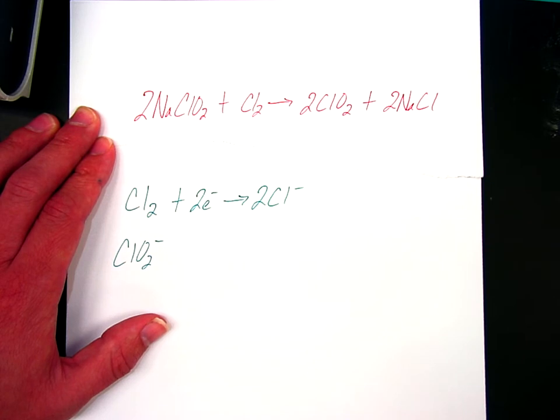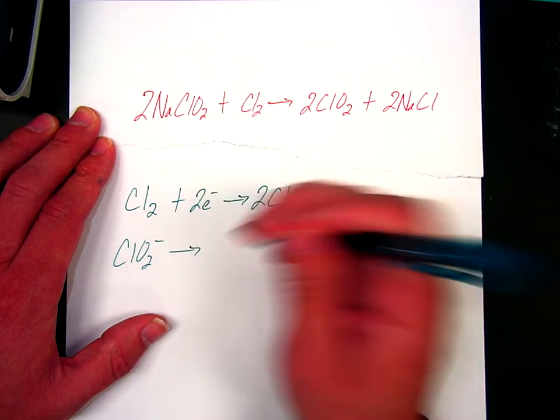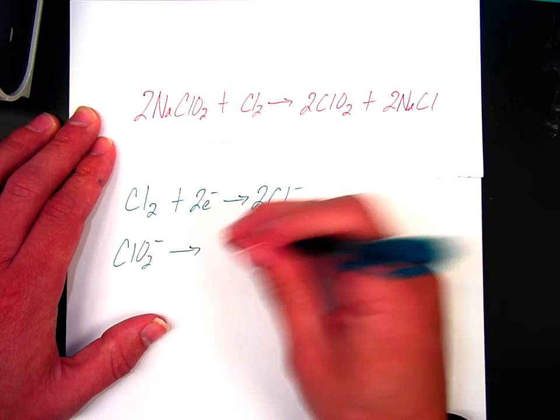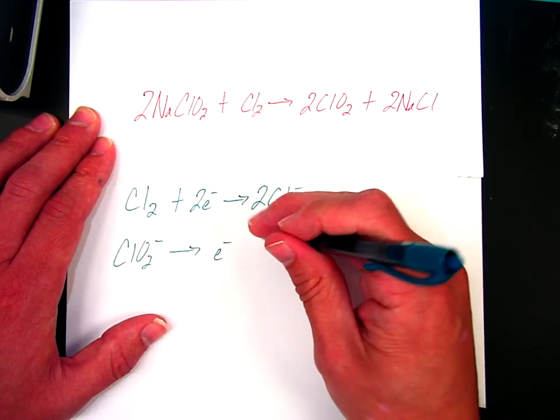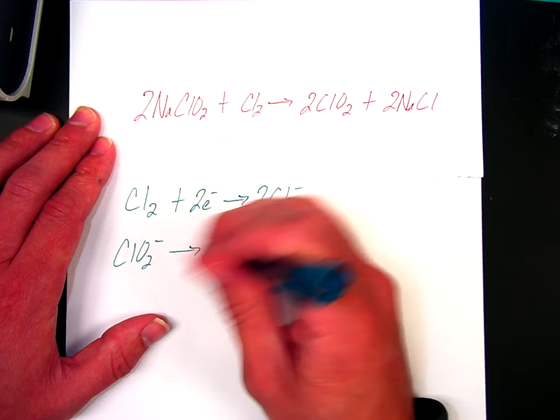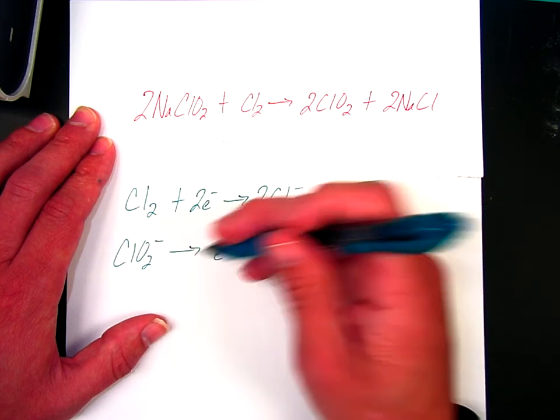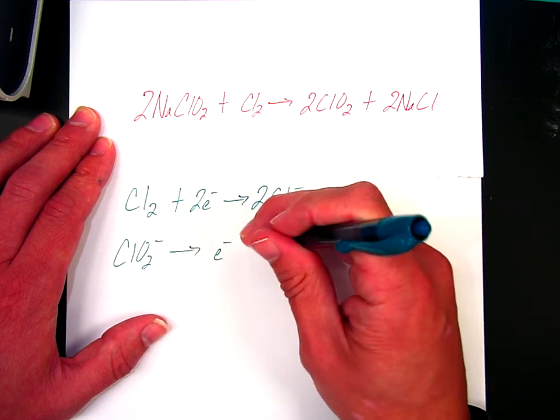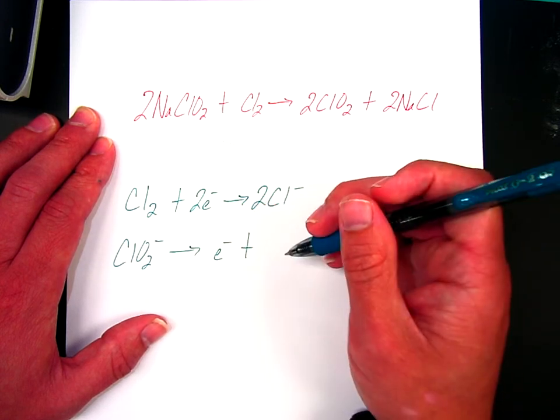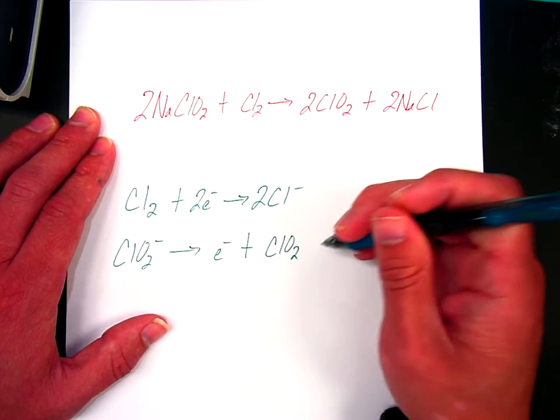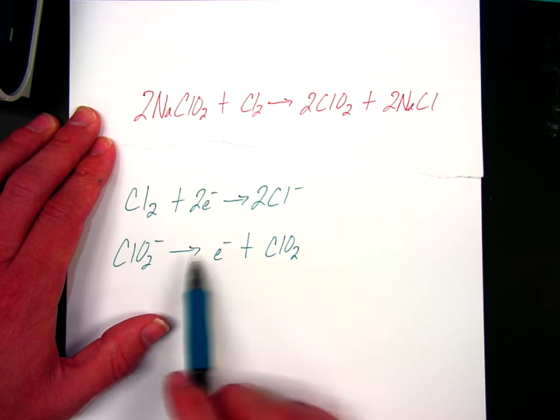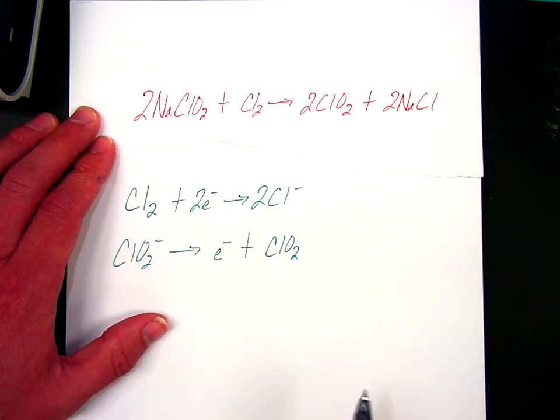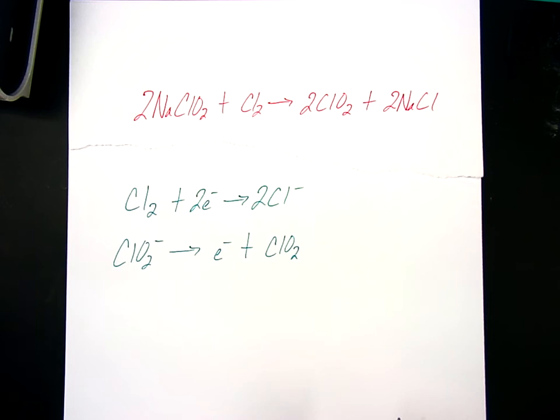Which means my friend over here is going to want to be oxidized, which means electrons must be a product. So we're actually fine there.